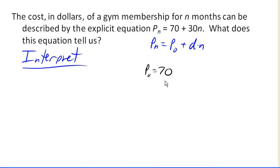First off, what measurement does this 70 take? Since we're adding these together to get Pn, and Pn is measured in dollars, then the 70 must be measured in dollars. This is the initial dollar amount, or the initial cost of a gym membership. So this is initial cost.